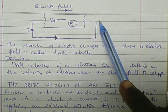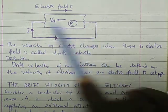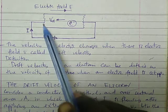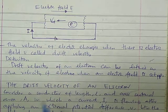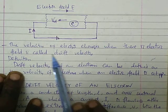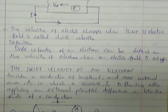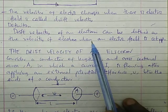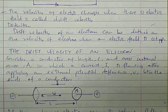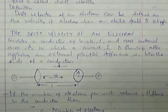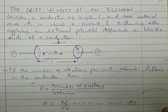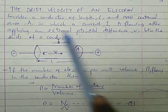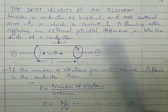The velocity of electric charge when there is an electric field is called the drift velocity. By definition, drift velocity of an electron can be defined as the velocity of an electron when an electric field is set up.